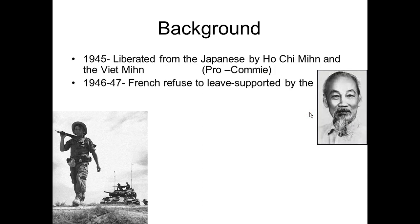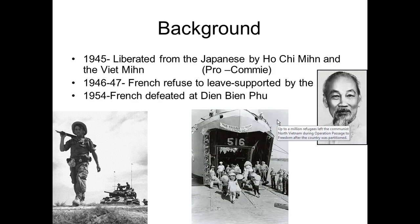In 1946 to 1947, the French refused to leave. This whole area was once called French Indochina and they didn't want to leave. They were supported by the United States. Meanwhile, the Viet Minh were being supplied by China and the USSR, and they wanted the French out.